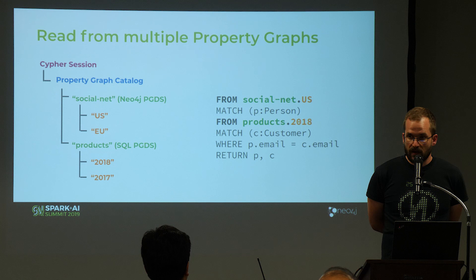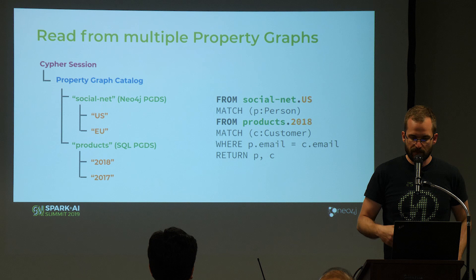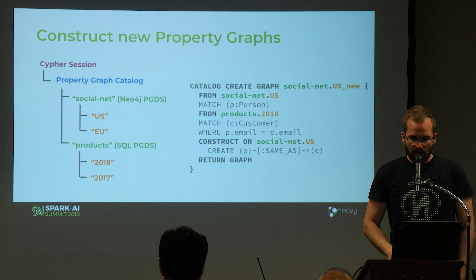An audience member asks how you deal with versions of the graphs. The answer is: those graphs are immutable. If you load the graph and add a relationship, you have to create a new graph or overwrite the existing one. There's no versioning scheme implemented at this point.